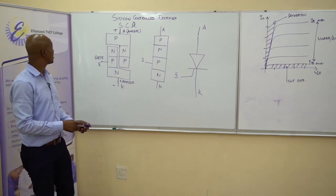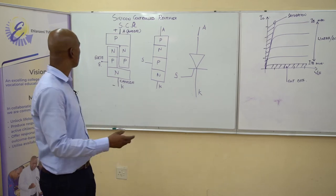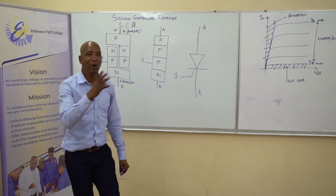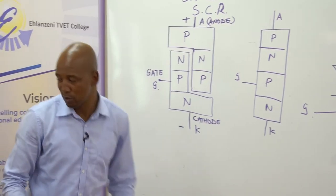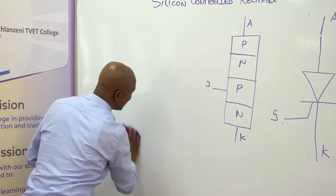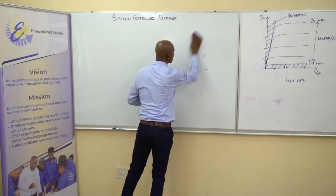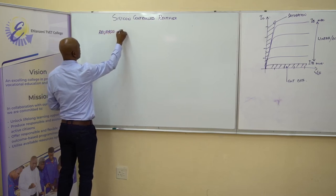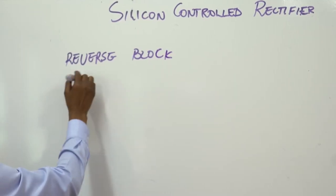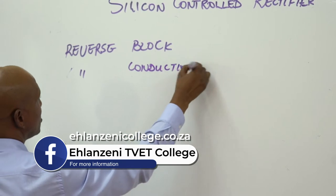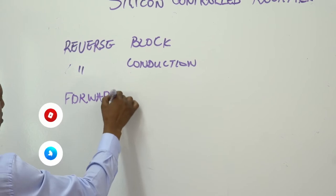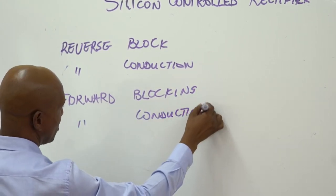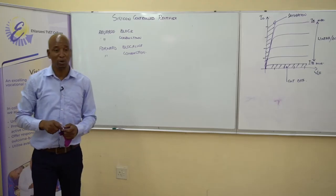How does an SCR operate? It has four operating modes: reverse blocking, reverse conduction, forward blocking, and forward conduction. Let's dissect each of these modes one by one, starting with reverse blocking.